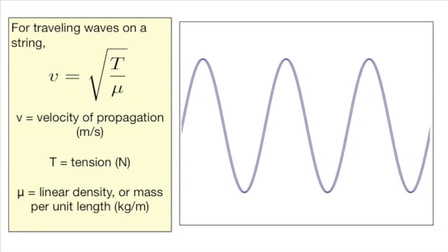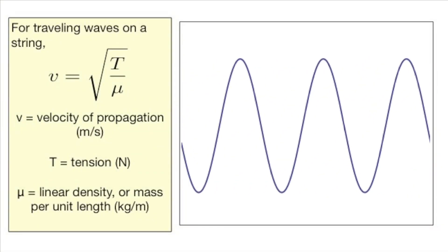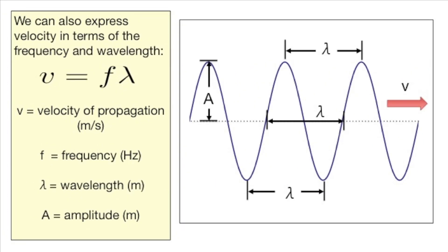For traveling waves on a string, the velocity v is equal to the square root of the tension over the mass per unit length of the string. We can also express the velocity as the product of the frequency and the wavelength.